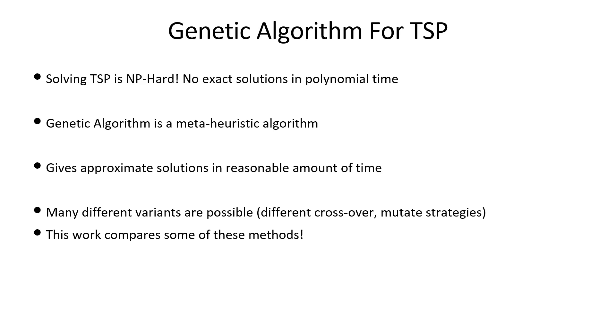The formulation of TSP as a genetic algorithm is tricky. There are many different choices in the mutation and crossover methods. This work implements some of the methods and compares them with small as well as large graphs.